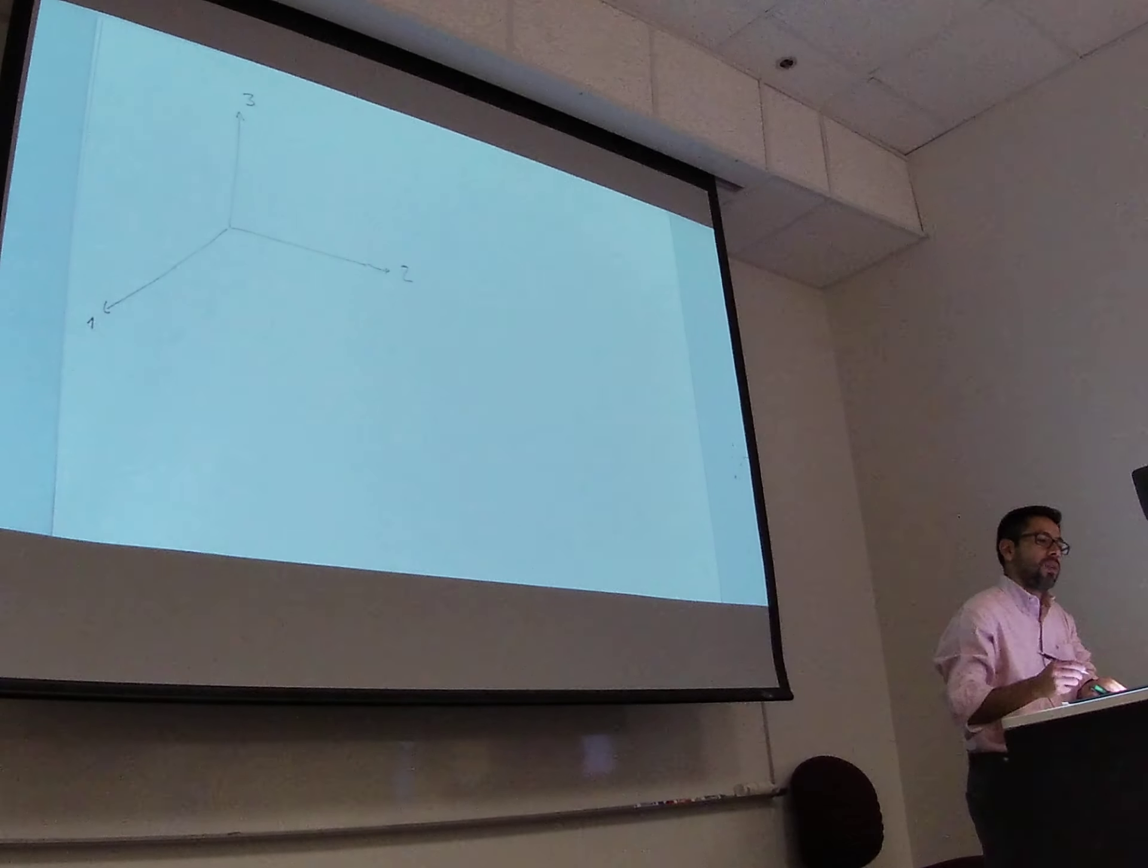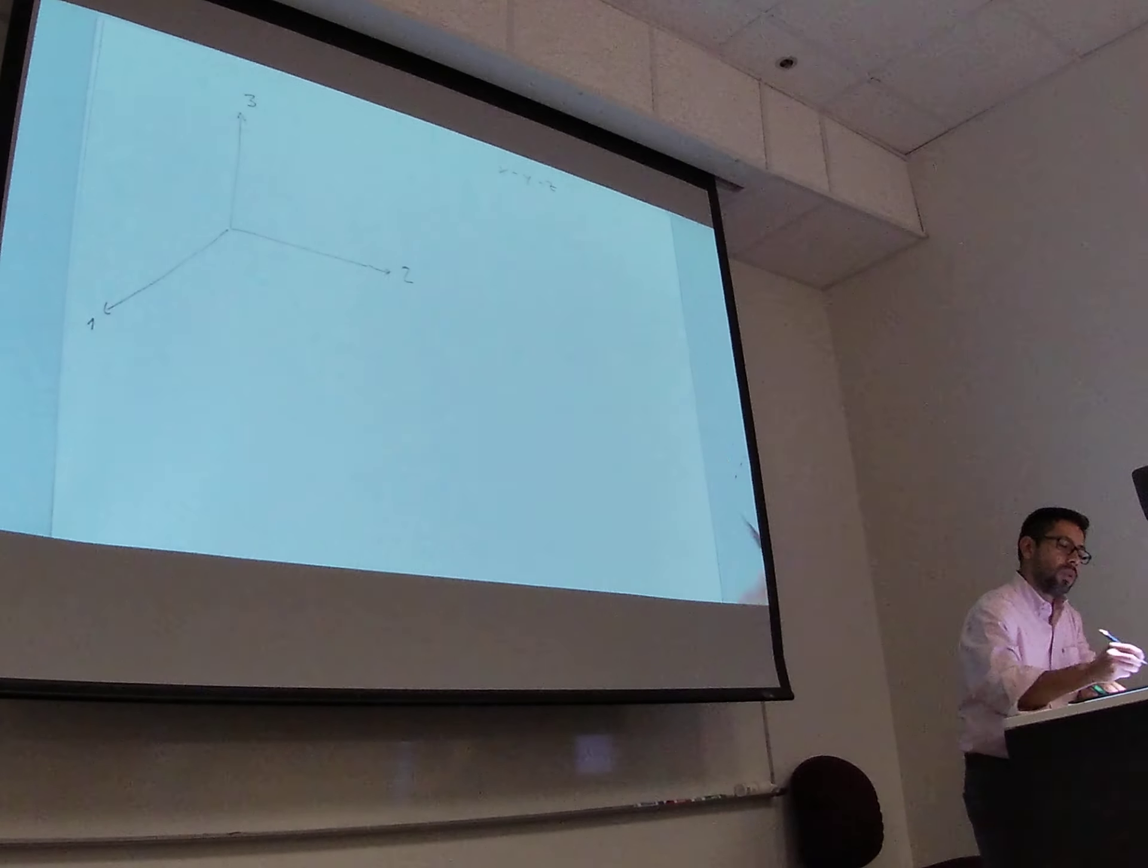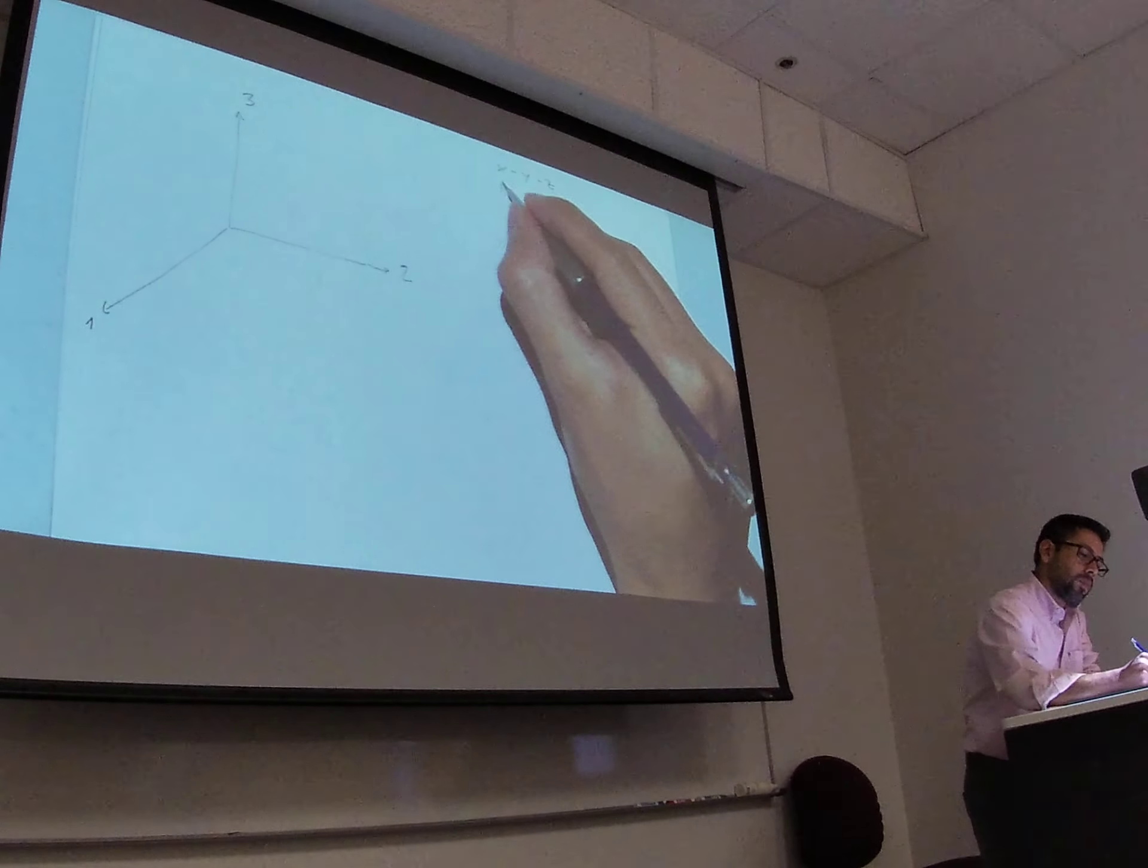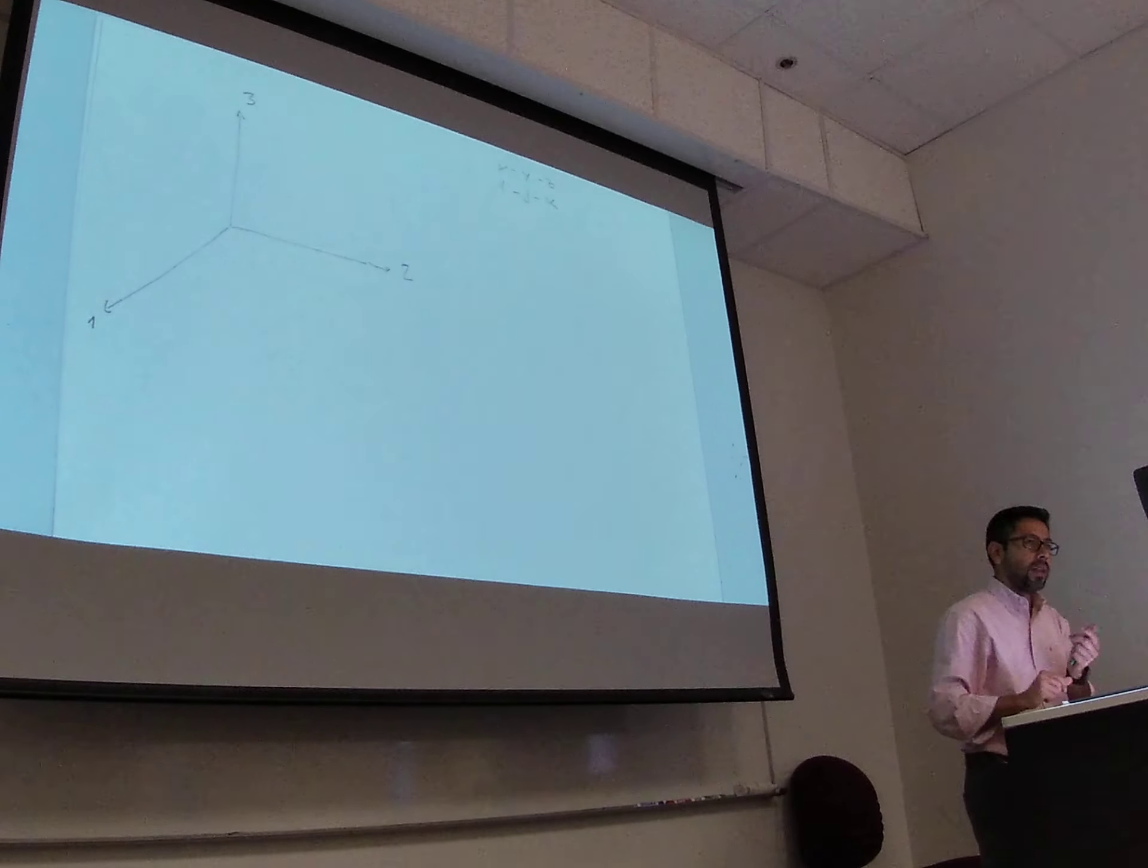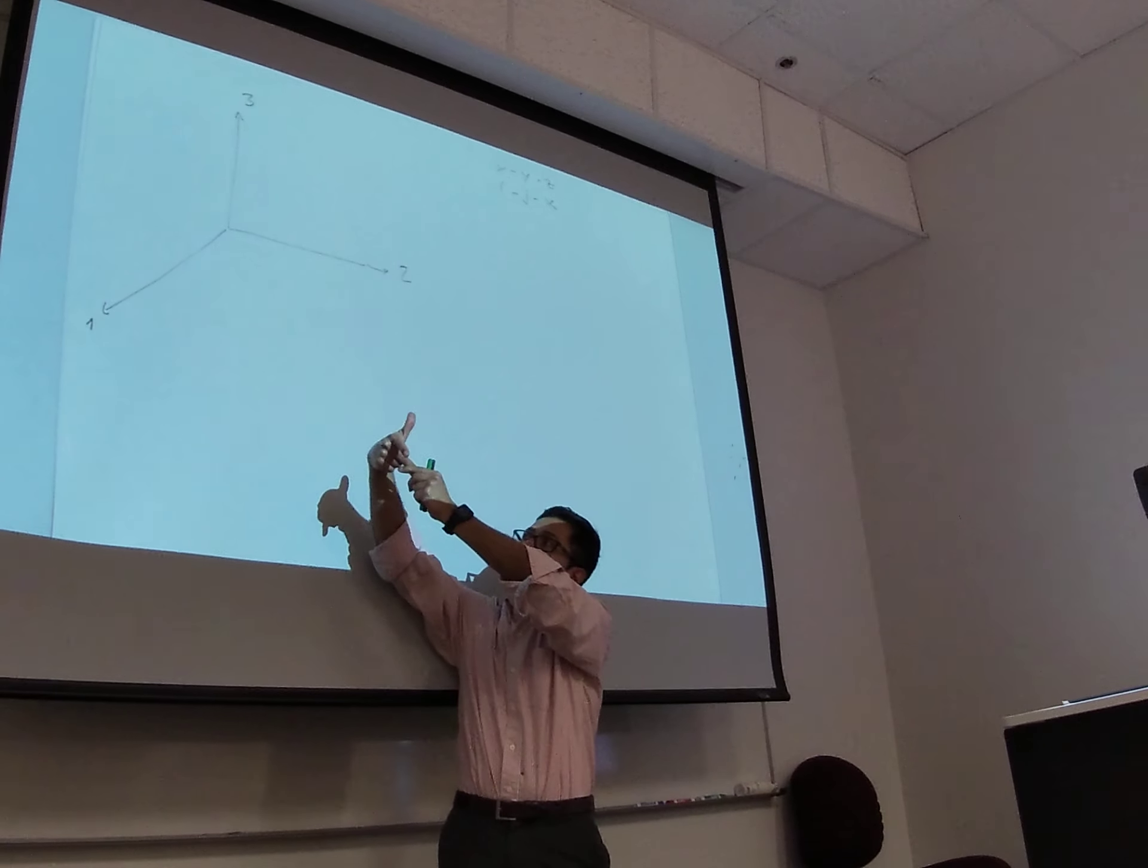So for this example, this one is going to be one, this one is going to be two, and this is going to be the axis number three. And it's the same, for example, if you call it x, y, z, or if you wanted to call it i, j, k. It's the same, okay? But in this case, let's call it one, two, three. So one index, two middle finger, three thumb.